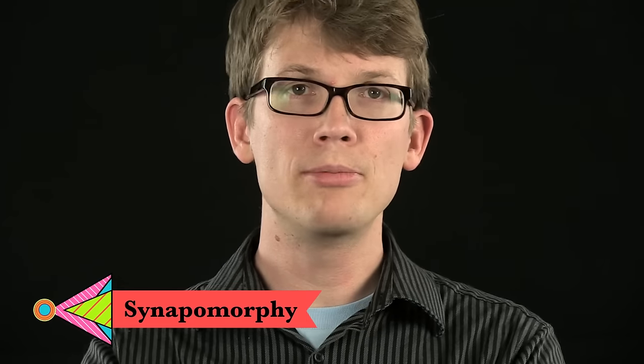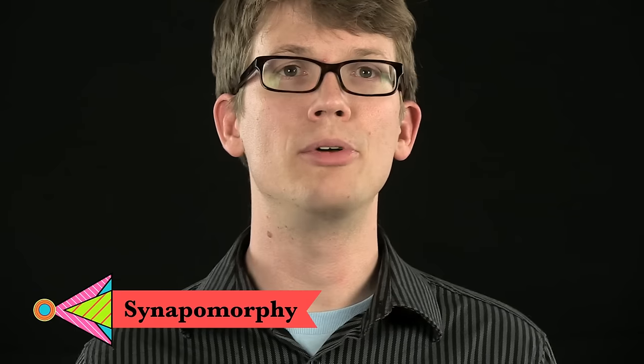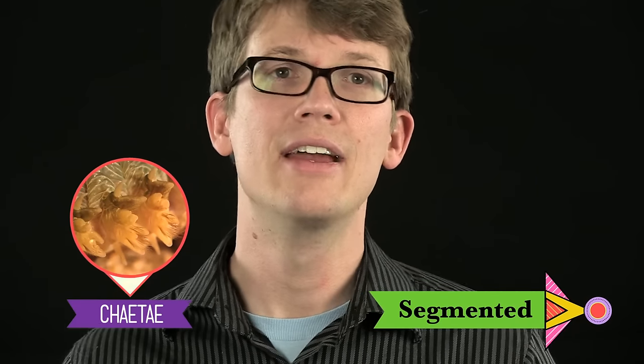Now this segmentation is a great example of synapomorphy in annelids. Synapomorphies are traits that set one group of animals apart from its ancestors and from other groups that came from the same ancestors. So unlike their flatworm and nematode cousins, annelids are segmented. And they've also got little bristles on their bodies called setae that provide traction and help them move through the dirt.